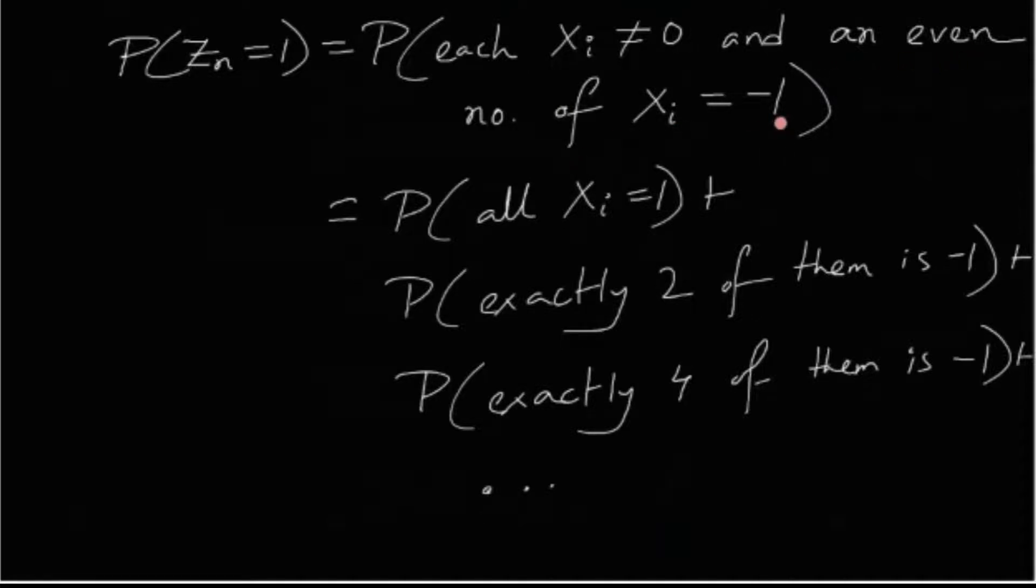Exactly. An even number of them has to be minus 1 and the others have to be 1. So it can be the case that all of the xi's are 1 or exactly two of them are minus 1 or exactly four of them are minus 1. You're getting the point. Just breaking down the events into understandable events.